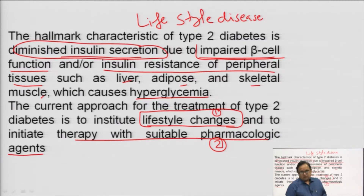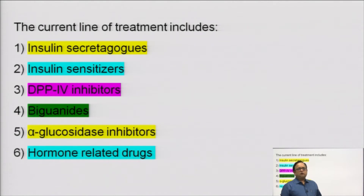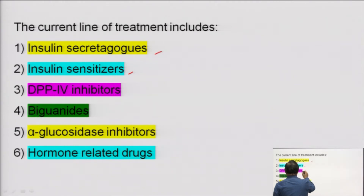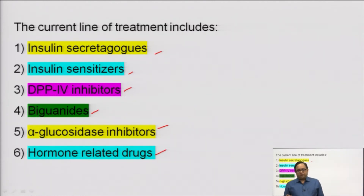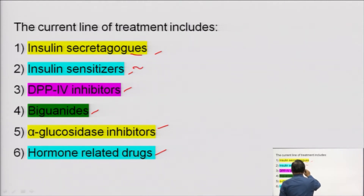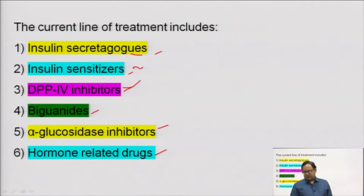The pharmacological agents available for the treatment include insulin secretagogues, insulin sensitizers, DPP-4 inhibitors, biguanides, alpha-glucosidase inhibitors, and hormone-related drugs. We will read about all these categories one by one, as these are the current lines of treatment available for type 2 diabetes.